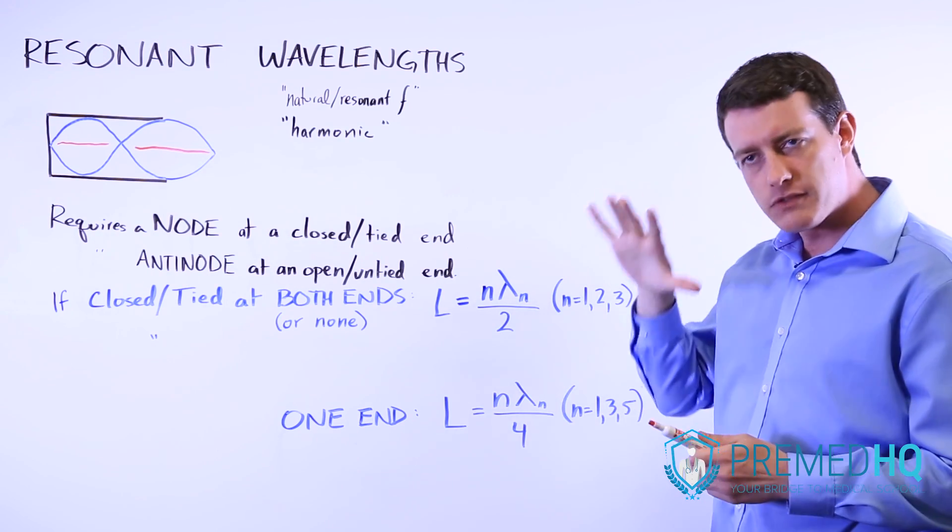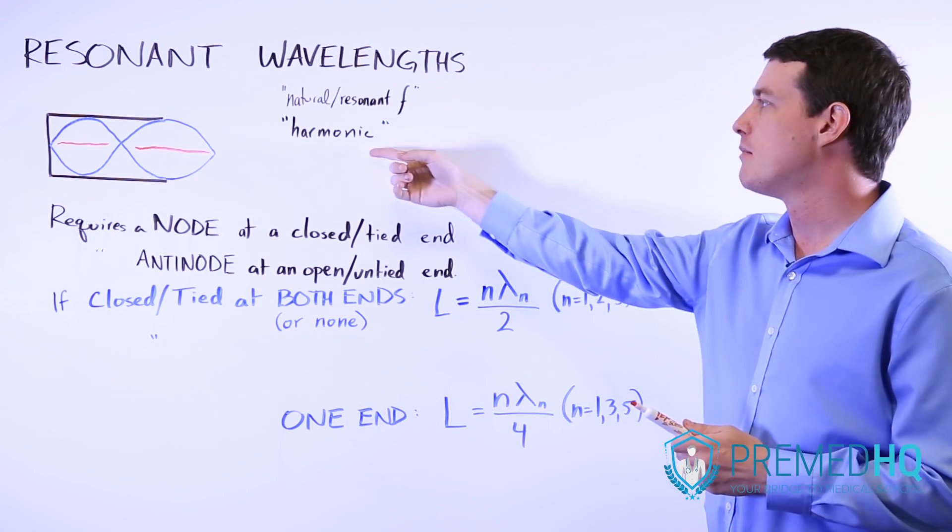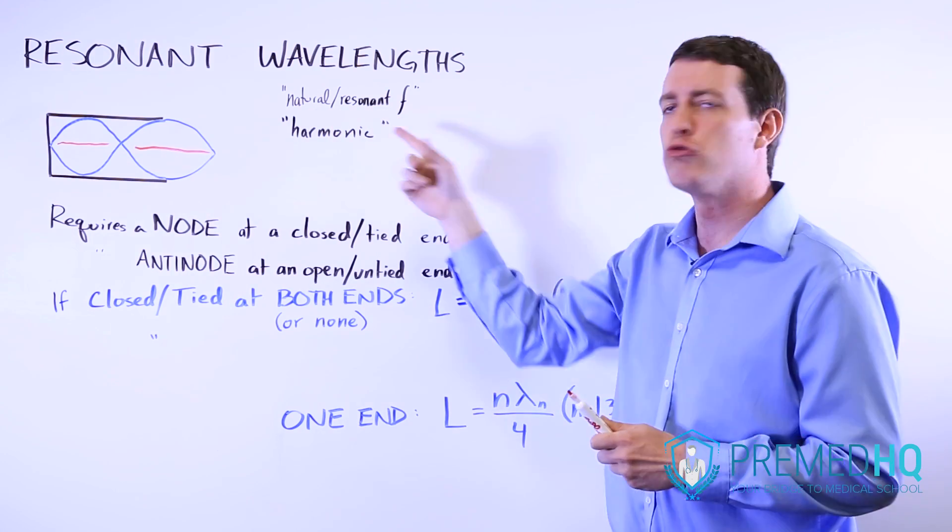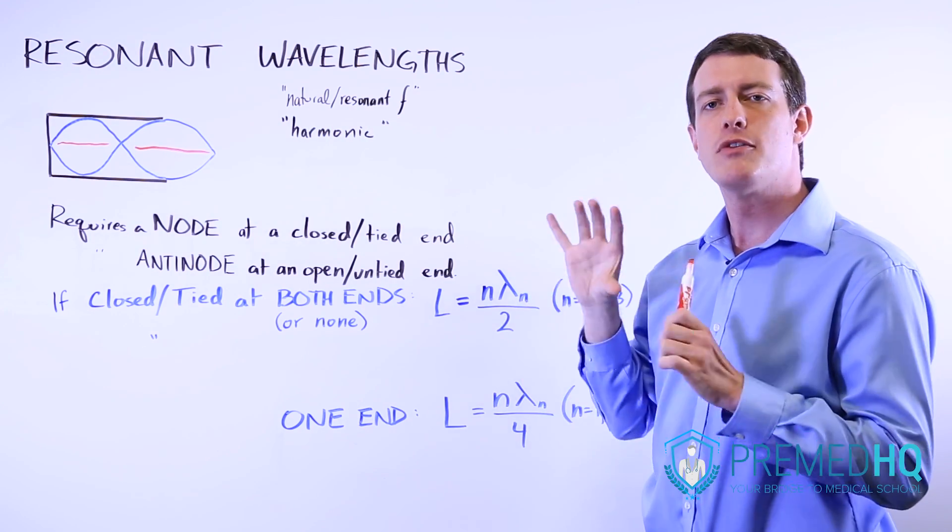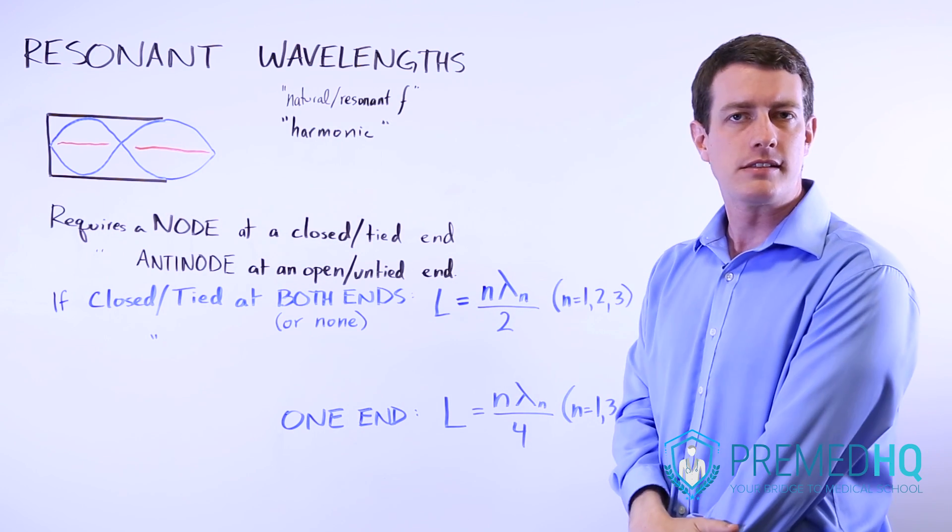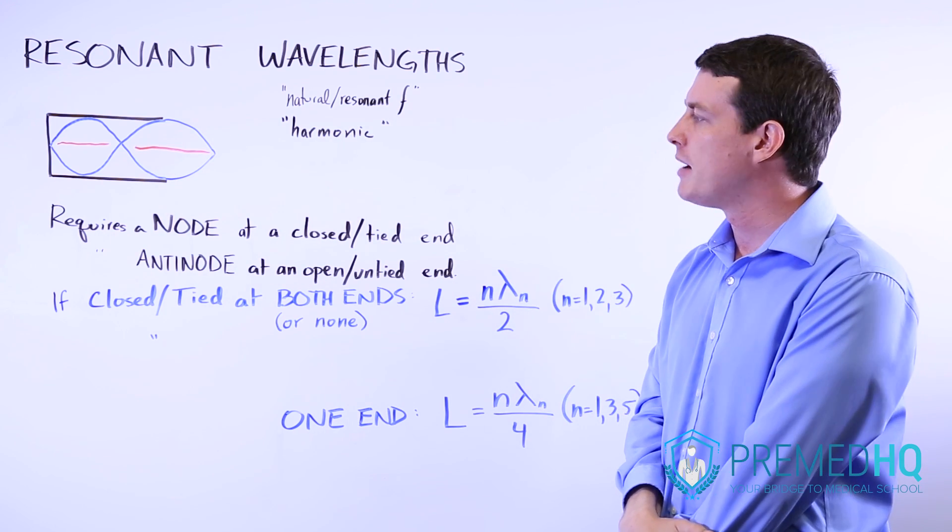And so essentially you get this very harmonious sound, hence the name harmonic. And this occurs at what they call a natural or resonant frequency. So if you have a pipe or a rope, you can get these resonant harmonic wavelengths that have very special qualities about them.